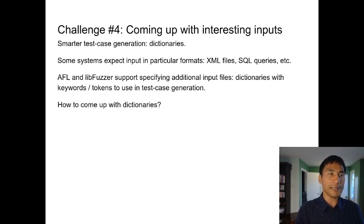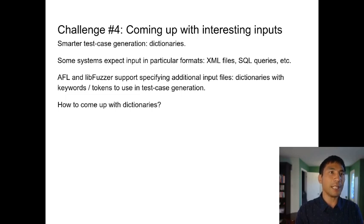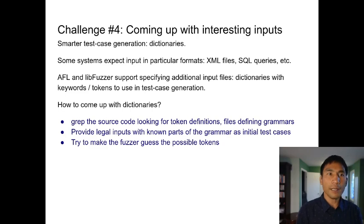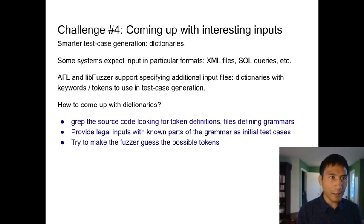Sometimes you have systems that expect inputs in particular formats, like XML files or SQL queries. AFL and LibFuzzer support additional input files — dictionaries — to use in test case generation, and you use the dictionaries to give input in a particular format. How do you come up with dictionaries? You can look for token definitions that the program expects or files that define grammars. If the thing has a grammar, you can provide legal inputs with known parts of the grammar as your initial test cases, or you can try to make the fuzzer guess possible tokens.